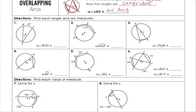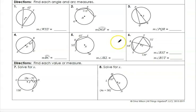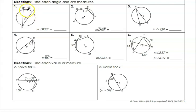Now that we've established those properties, let's reinforce them with practice problems. In number 1, we're given the measurement of arc WY. Remember, the inscribed angle — angle X — is always half of the measurement of its intercepted arc. So since arc WY is 62, angle WXY is going to be 31, which is 62 divided by 2.